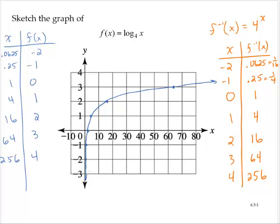So there's the graph of f(x) = log₄(x). And again, there's an asymptotic feature here. There's a vertical asymptote at x = 0.